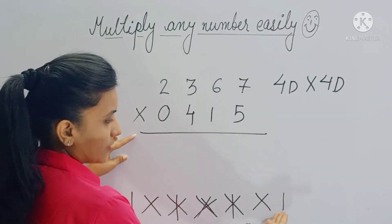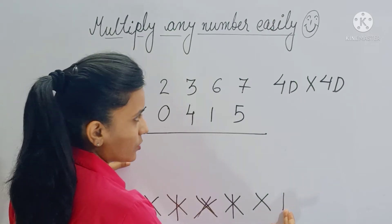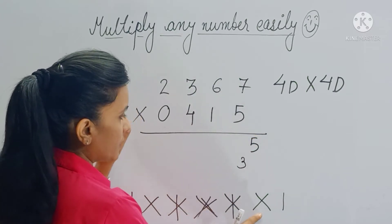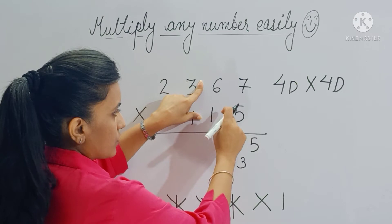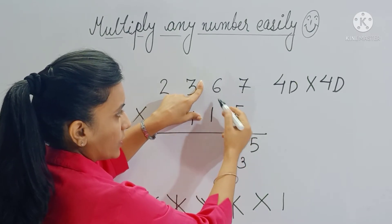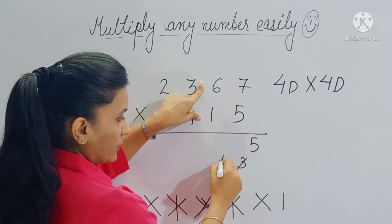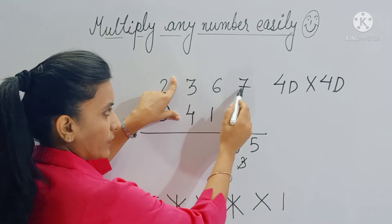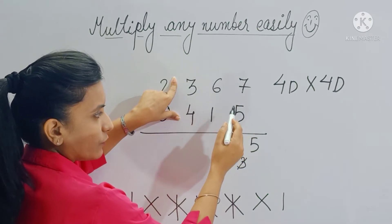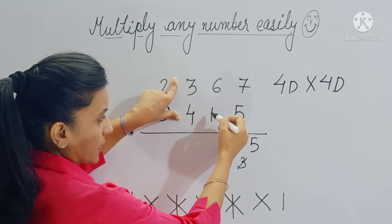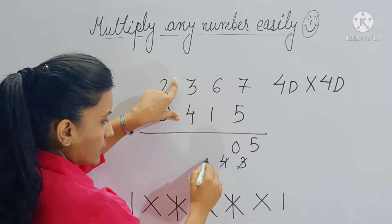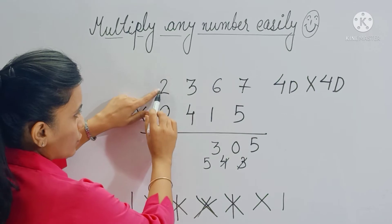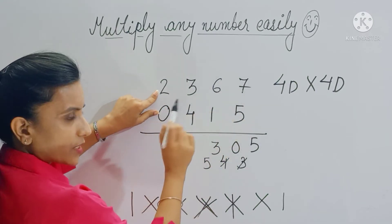Step one: multiply the last digits — five sevens are 35. Step two is cross: five sixes are thirty, seven ones are seven; thirty plus seven is thirty-seven, plus three carry is forty. Step three is star: three fives are fifteen, four sevens are twenty-eight; twenty-eight plus fifteen is forty-three, plus six is forty-nine, plus four is fifty-three. Step four is double-cross: two fives are ten, zero sevens are zero.